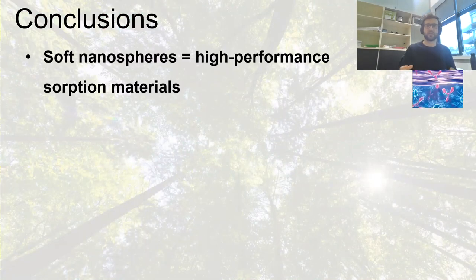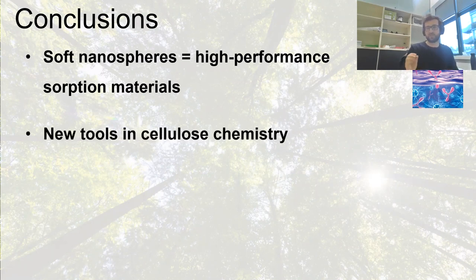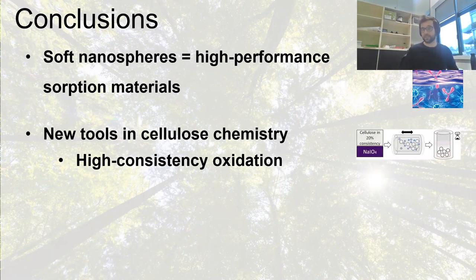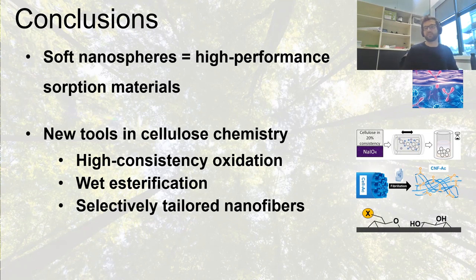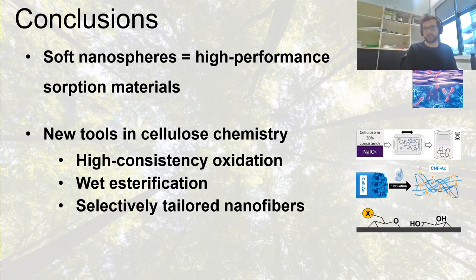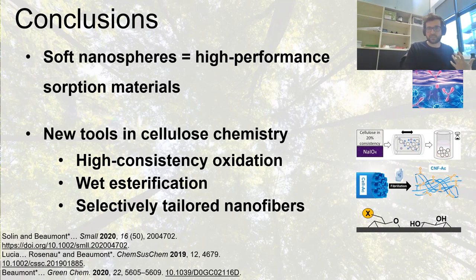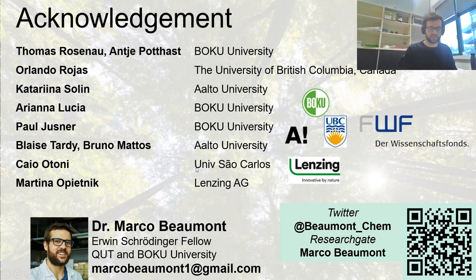To conclude: I showed you a new class of nanocellulose — soft nanospheres — which are especially promising as high-performance sorption materials and could increase the sensitivity of next-generation immunoassays. I showed new tools in cellulose chemistry: periodate oxidation at high consistency for resource efficiency, wet esterification enabling introduction of acetyl and hydrophobic groups without drying or water removal, and regioselective esterification allowing any desirable group to be selectively placed on the primary hydroxyl of cellulose. I would like to acknowledge all collaborators and supervisors at VTT and Aalto University. Thank you for your attention and I look forward to answering your questions.